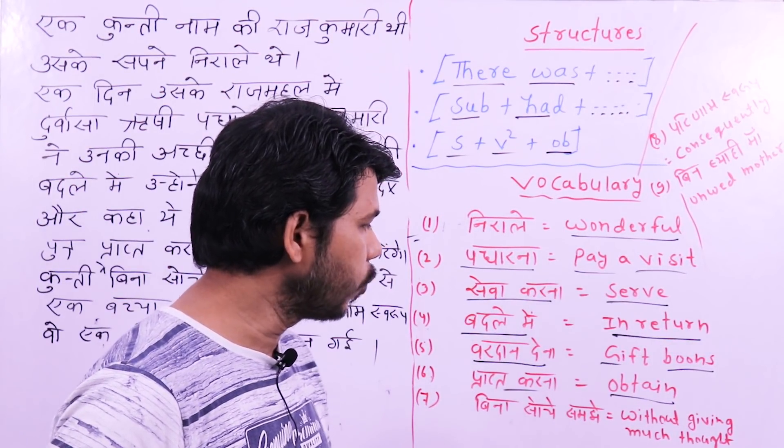एक दिन उसके राजमहल में दुर्वासा ऋषि पधारे — so: one day, दुर्वासा ऋषि is your subject. ऋषि means sage, so use 'sage.' Sage Durvasa — पधारे means paid a visit, so second form 'paid a visit.' उसके राज महल में means 'to her palace.' So the sentence is: one day, sage Durvasa paid a visit to her palace.